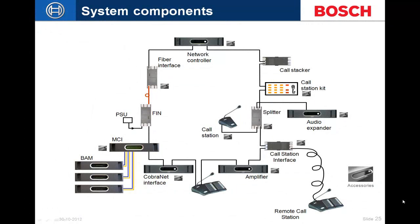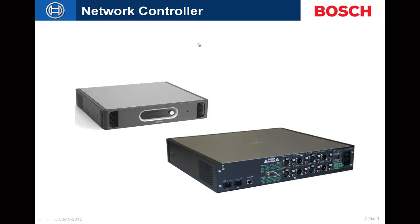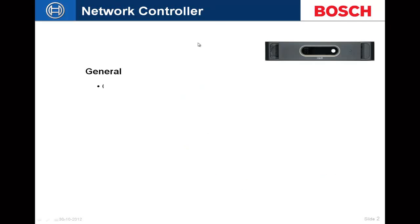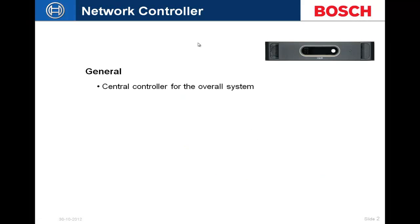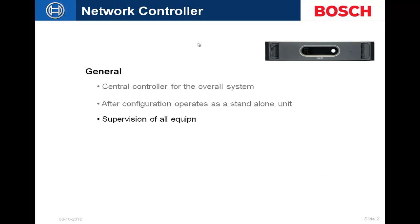In this video series, we'll be going over the system components of the Bosch Presidio system. The first component is the network controller, which is the heart of the Presidio system. At its base is the controller — it's the main controller for all system components. It acts as a standalone system; once an NCO is configured, it no longer needs a connection with a computer or server of any kind.